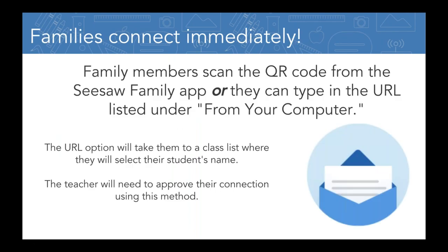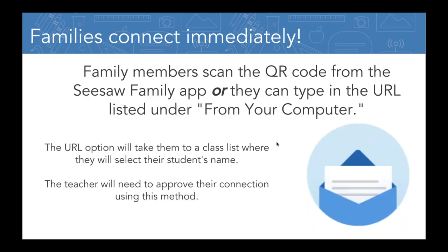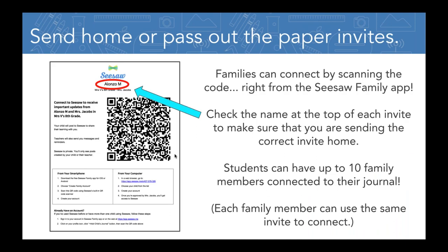Family members can scan the code in the Family app and join in an instant. Or they can type the web address or URL listed on the invitation — under 'From your computer.' So if a parent is not connecting with a smartphone and just wants to connect with a computer, they can type in that address. There's just one extra step: they have to pick their student's name from a list. But it is super fast for both parents.